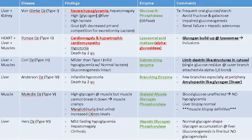Without a properly functioning glucose-6-phosphatase, you get severe hypoglycemia because the final step in gluconeogenesis is impaired, so the liver is not working properly and you get a buildup of glycogen in the liver. Severe hypoglycemia is a very important finding in Von Gierke's, and because of that the treatment is frequent oral glucose to maintain a baseline blood glucose level.